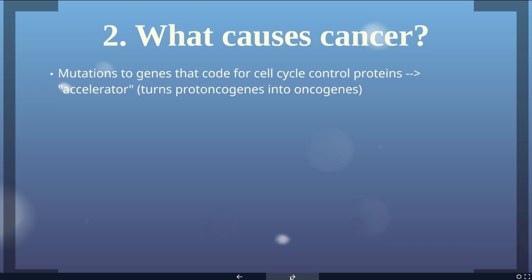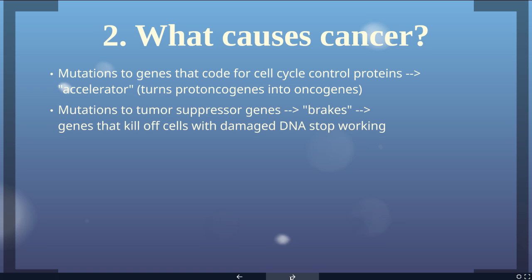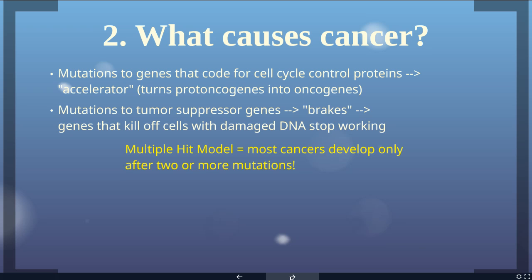There is another set of genes called the tumor suppressor genes — these are the brakes of the cell cycle. They kill off cells that are reproducing too quickly or have damaged DNA. Most cancers develop through what we call the multiple-hit model. A single mutation to one proto-oncogene, or a single mutation to one tumor suppressor gene, probably won't cause cancer. But if you get mutations to both a proto-oncogene and a tumor suppressor gene, you're now in a car that's lost both the accelerator control and the brakes. Cancer as a disease develops when you accumulate more than two of these mutations.